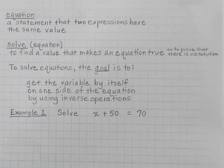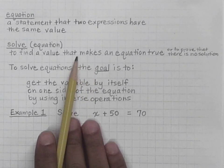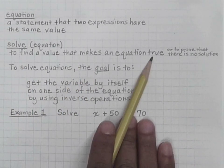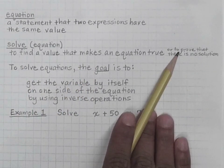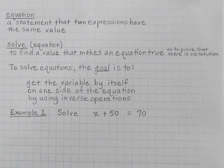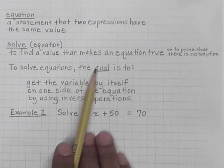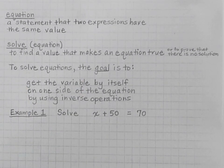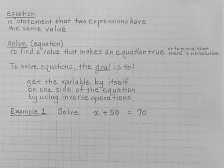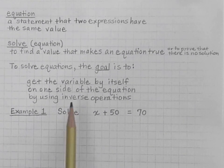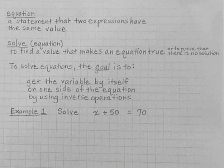In sixth and seventh grade, we're going to be focusing mostly on finding a value that makes the equation true. But when you get to upper-level math, there will be times when you have to prove that there is no such solution. To solve equations, the goal is to get the variable — which is the letter — by itself on one side of the equation by using inverse operations. Inverse operations are operations that undo each other.